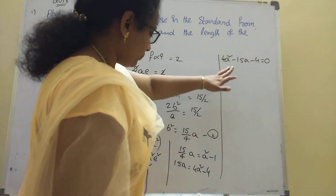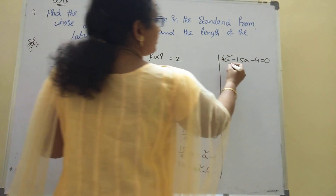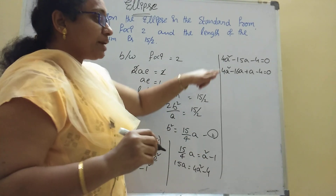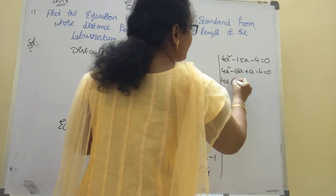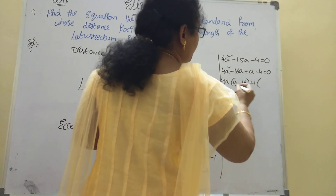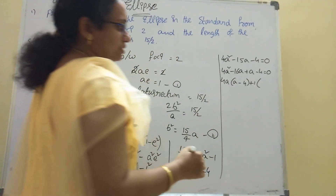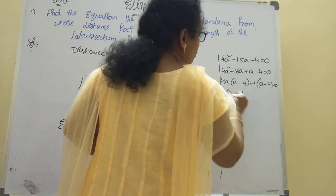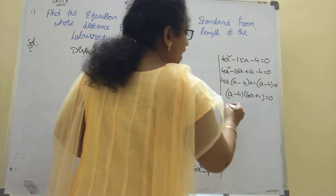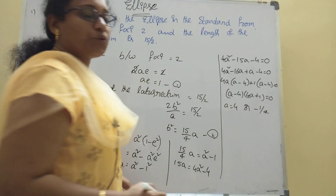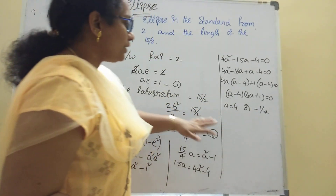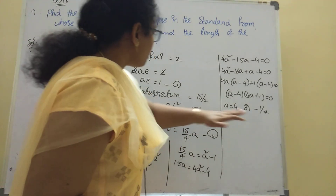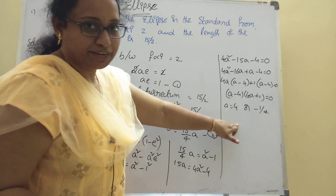We have 4a² − 15a − 4 = 0. Splitting the middle term: 4a² − 16a + a − 4 = 0. Taking common factors: 4a(a − 4) + 1(a − 4) = 0, so (a − 4)(4a + 1) = 0. Therefore a = 4 or a = −1/4. Since a must be positive, a = 4.